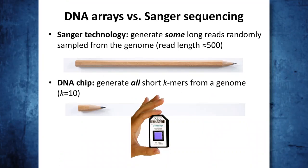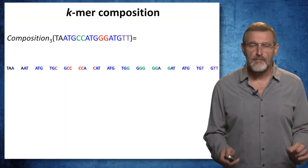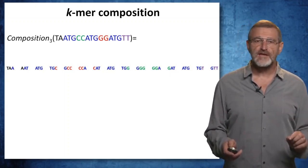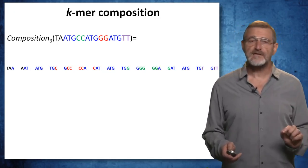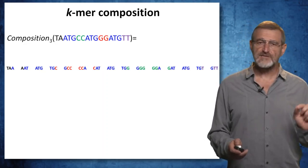Here's the main difference between DNA chips (or DNA arrays) and Sanger sequencing. In Sanger technology, biologists generate some — but not all — long reads sampled from the genome, with read length approximately 500 nucleotides. In the DNA chip technology, biologists generate all short k-mers from the genome, but k is much smaller. In the original DNA chip paper, it was proposed that k equal 10. Ideally, a DNA chip would generate the k-mer composition of a string — a multi-set of k-mers present in the string. Note that some k-mers in this multi-set appear multiple times; for example, ATG appears three times. Our goal is to reconstruct the original string from this k-mer composition.